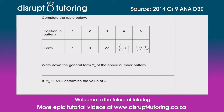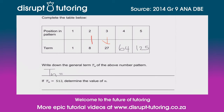Now, write down the general term tn of the above number pattern. What do we do to find the tn? We need to do something to our n. What have we been doing to our n? It's simply been n cubed — 1 cubed, 2 cubed, 3 cubed, 4 cubed, 5 cubed gives us this answer. Which means if we had an n, to get the general term we would simply cube it: tn = n³.